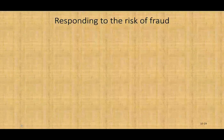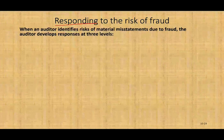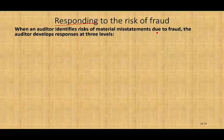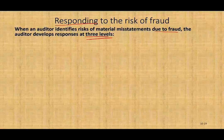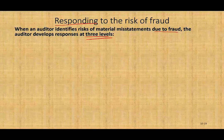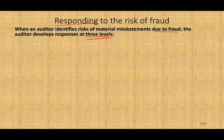So what should we do as auditors? How do we respond to the risk of fraud? When the auditor identifies risk of material misstatement due to fraud, the auditor develops responses on three levels. We're going to look at these responses and break them down. The first level is the overall response.